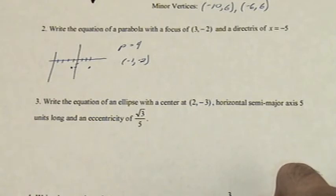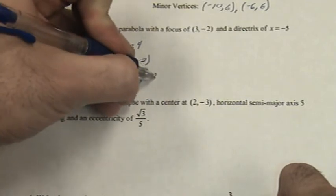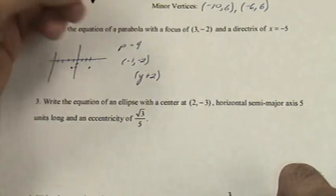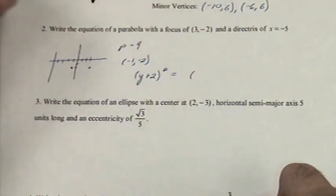That's our vertex. And we already said that the y value is the one that is going to be squared, because it's horizontal. So the equation will read, y minus negative 2, or plus 2, squared, equals